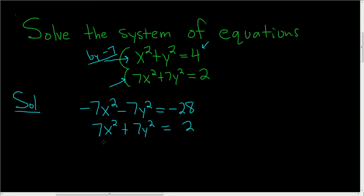And now we can add both equations. So when you add negative 7x² to 7x², you get 0. When you add these, you get 0. And when you add these, you get negative 26. So 0 is equal to negative 26. That's obviously not true. So there is no solution to this system of equations.